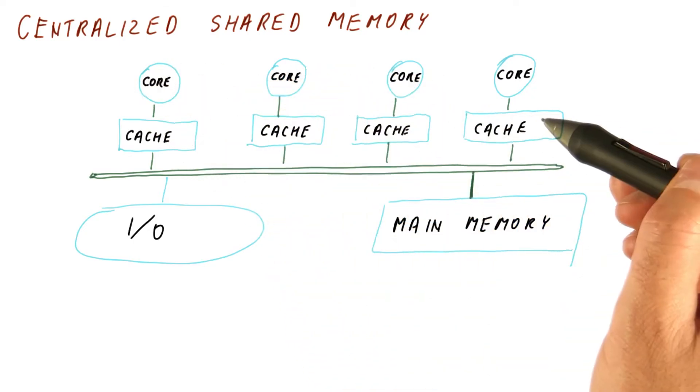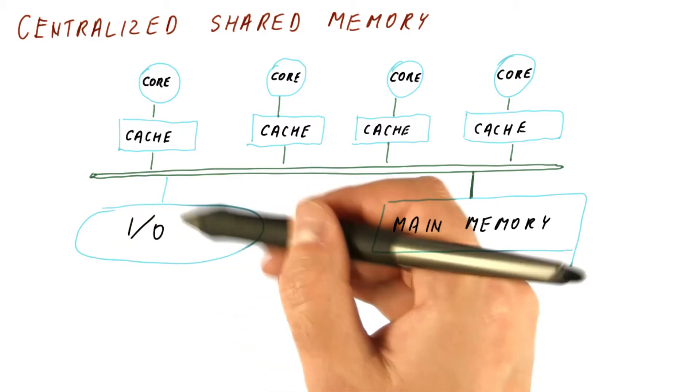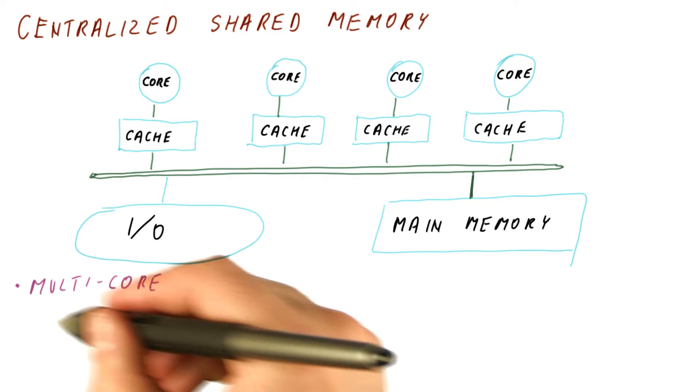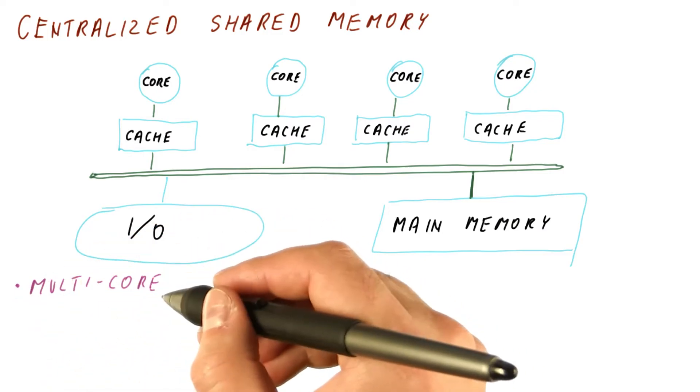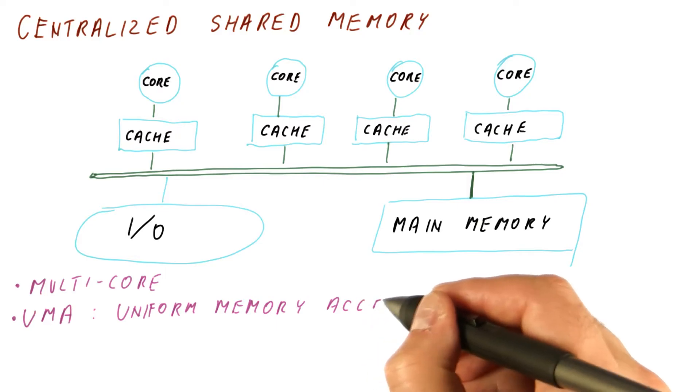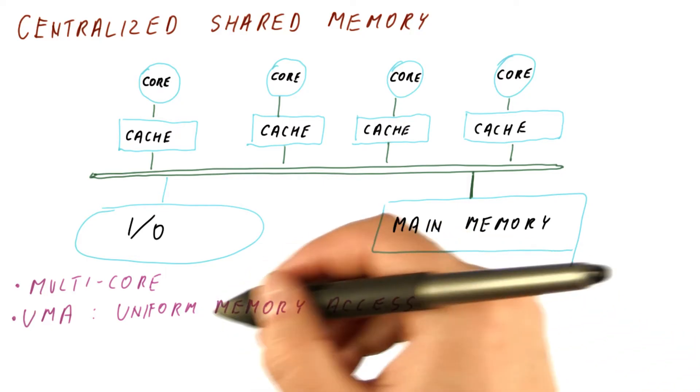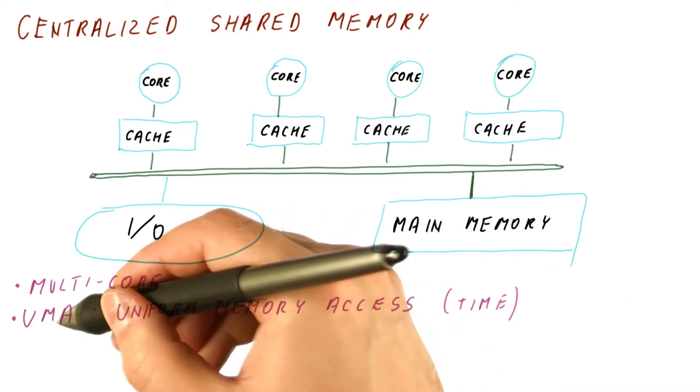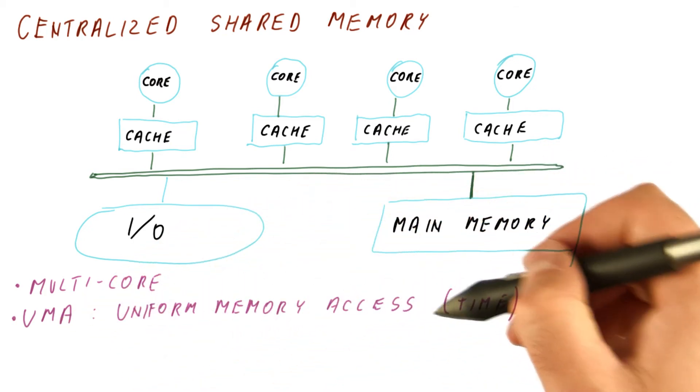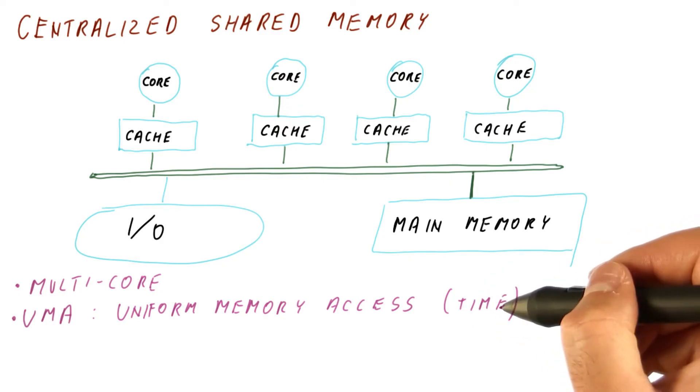Similarly, any of the cores can access any of the I.O. devices here. This type of a system is really what today's multi-core processors tend to look like, and is also called UMA, which stands for Uniform Memory Access Time. But it's not UMAT, it's just UMA. But what is uniform is really the time to access the memory.